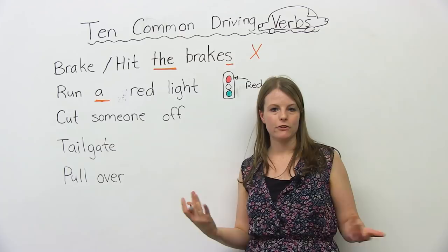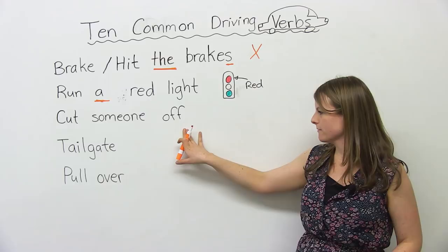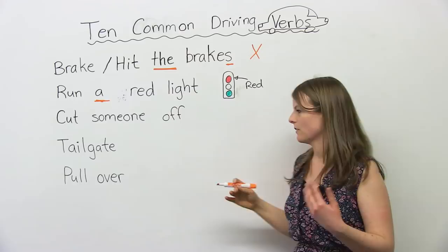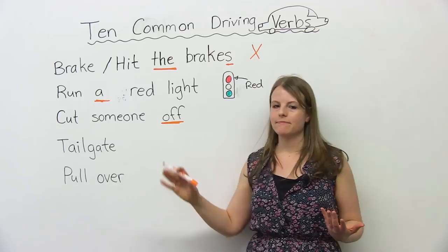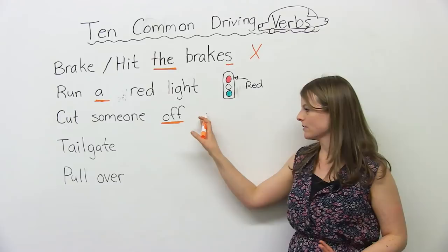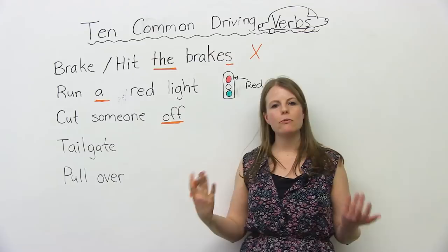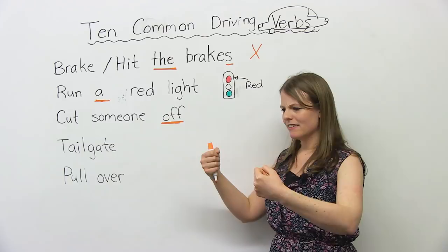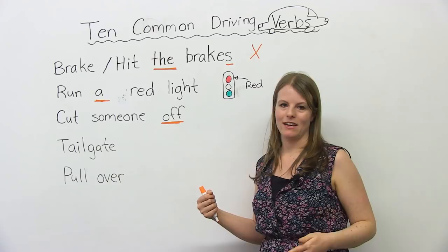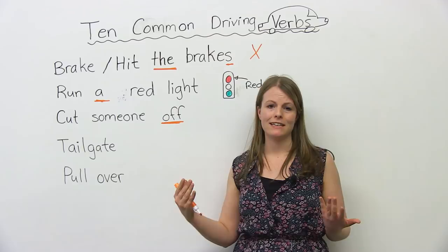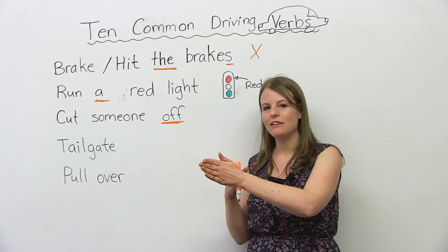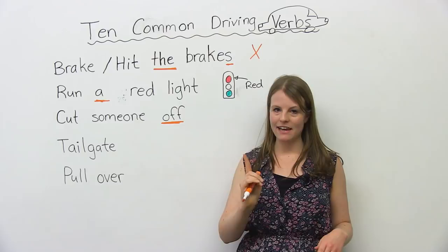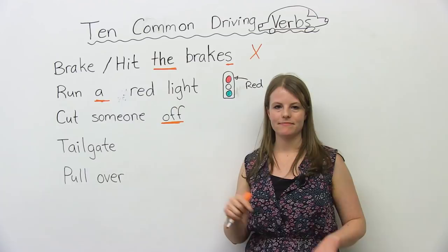Number three: another common verb we use when talking about driving is cut someone off. Now, this is a phrasal verb — the preposition off is important because a different preposition gives a totally different meaning. When you cut someone off, someone comes in front of you very fast; it can cause an accident. It means you drive in front of someone very fast and don't give them much room. Note: we say 'I cut someone off,' not 'I cut off someone.'